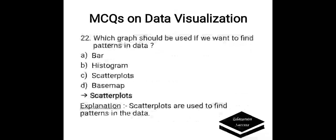Which graph should be used if we want to find patterns in data? Options are: A. Bar, B. Histogram, C. Scatter plots, D. Basemap. Correct answer is scatter plots. Scatter plots are used to find patterns in the data.